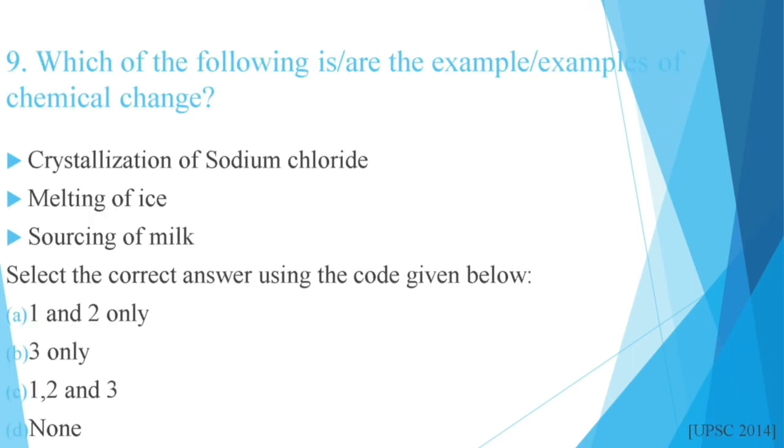Question number 9: Which of the following are examples of chemical change? Chemical change is when a particular element is changed to another element. Physical change is when only physical appearance changes. Options: Crystallization of sodium chloride, melting of ice, souring of milk. Select the correct answer using the code given below: 1 and 2 only, 3 only, 1, 2, and 3, or none. This question is also in UPSC 2014. The correct answer is 3 only.